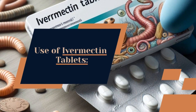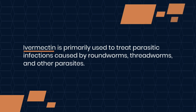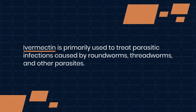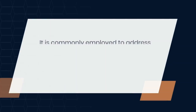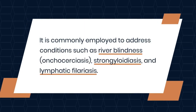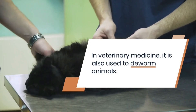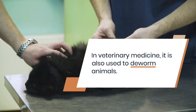Let's start with the use of ivermectin tablets. Ivermectin is primarily used to treat parasitic infections caused by roundworms, threadworms, and other parasites. It is commonly employed to address conditions such as river blindness, strongyloidiasis, and lymphatic filariasis. In veterinary medicine, it is also used to deworm animals.